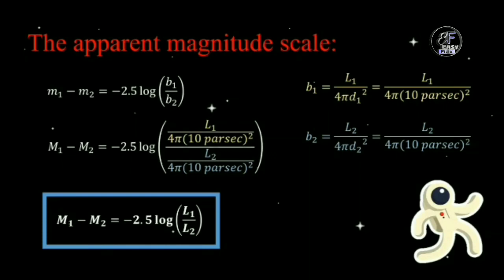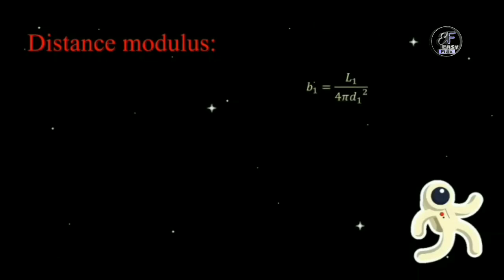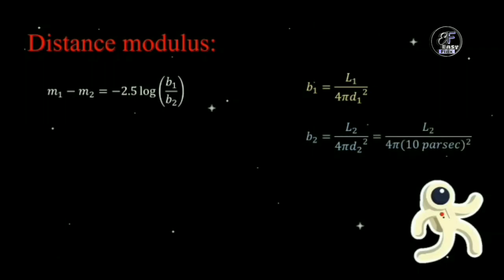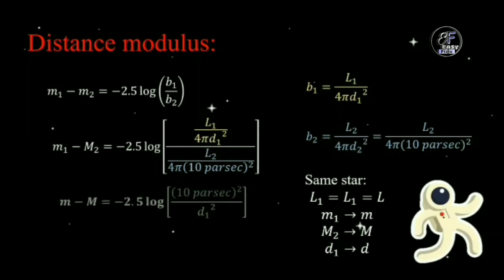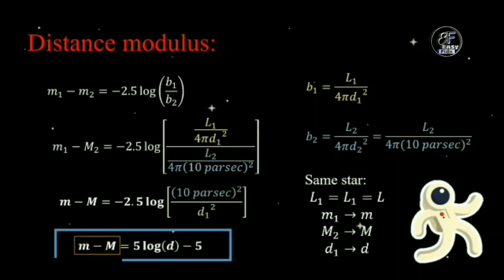Now we know the basic formulas for apparent and absolute magnitudes. The difference between the apparent magnitude and absolute magnitude of a star is called the distance modulus. Consider a star with apparent magnitude m at distance D, and substitute 10 parsecs for D2 so that small m2 becomes absolute magnitude capital M. The final relation is: m − M = 5 log D − 5. This difference, m minus M, is the distance modulus.